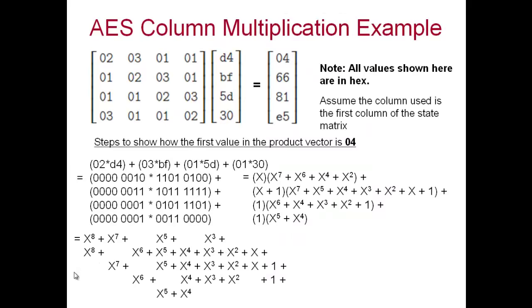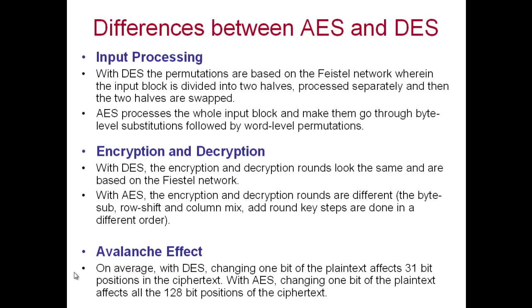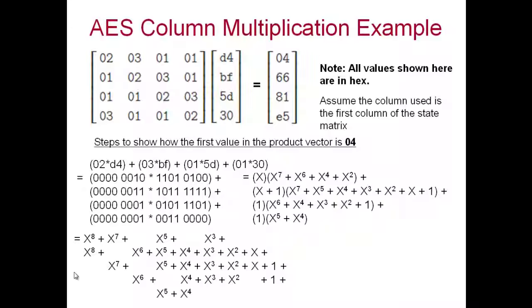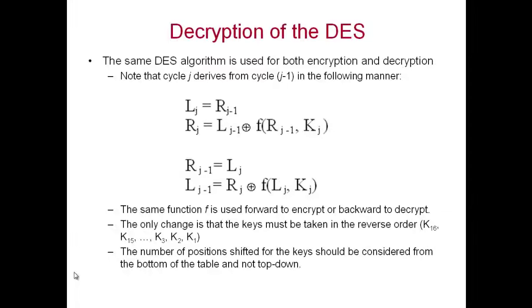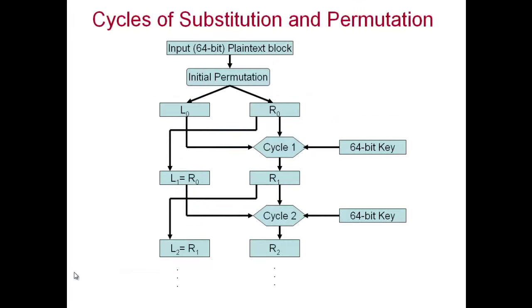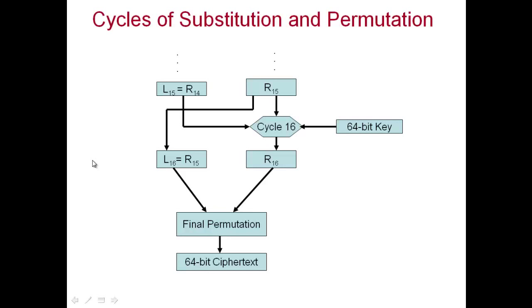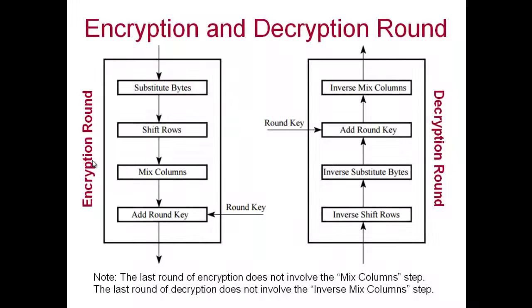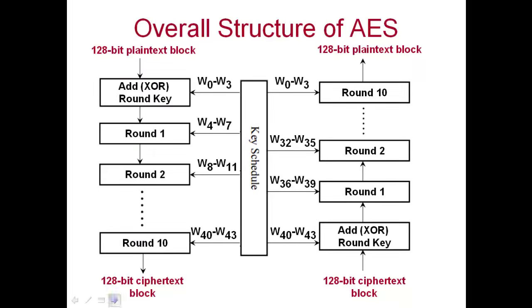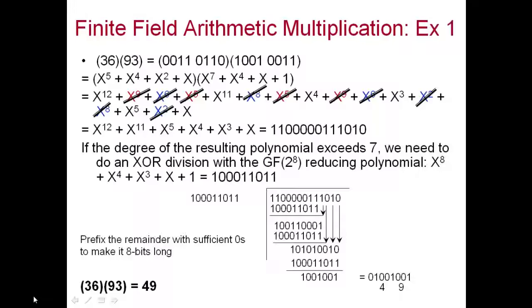In summary, what are the main differences between AES and DES? With respect to input processing, in DES we break the 64-bit block into two 32-bit halves and process them separately using the Feistel network. Both 32-bit quantities go into the Feistel network, and then we merge them and do a final permutation. In AES, we do not break the input — we pass the whole 128-bit block to each round.